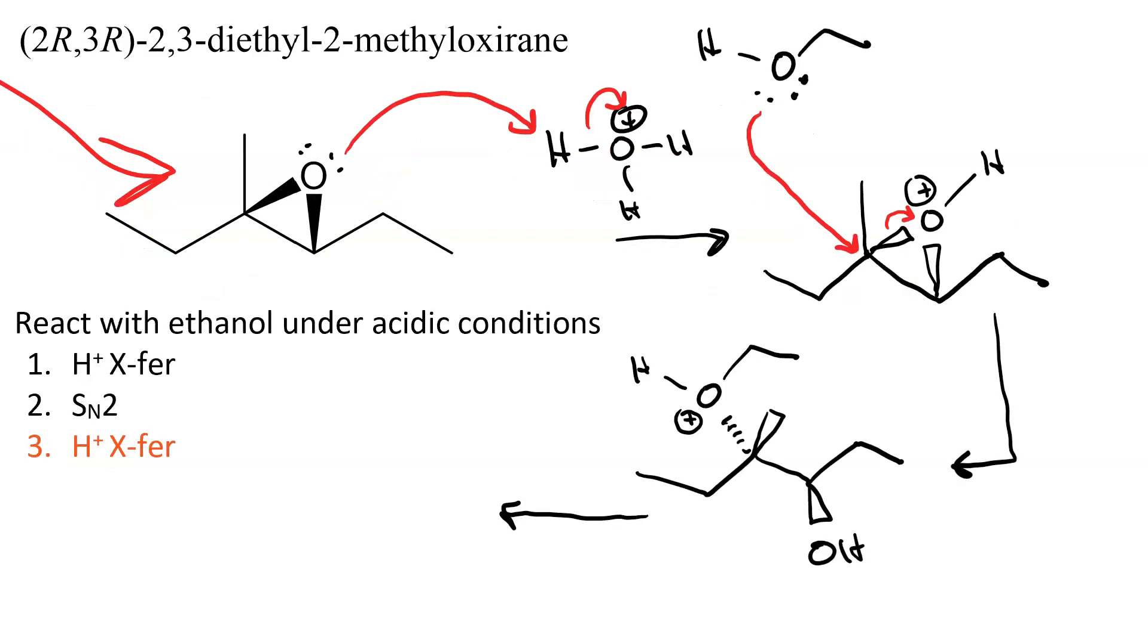In this third step, which is proton transfer, we need a base to take that proton from the oxonium. And it turns out that another molecule of ethanol is perfectly capable of acting as the base. So here we have proton transfer. And there is our final ether product.